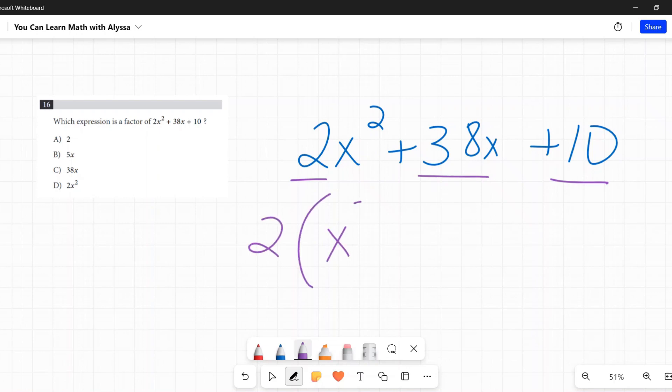So 2 goes into 2x squared one time, x squared is left. We divide it by 2. So 38x, when we pull out a 2, 19x is left. And 10, when you divide by 2, 5 is left.